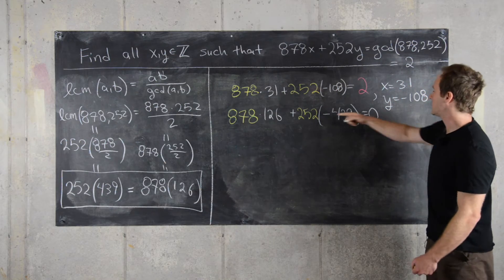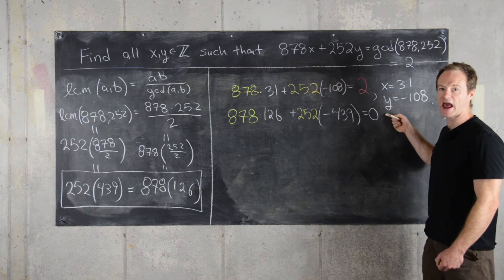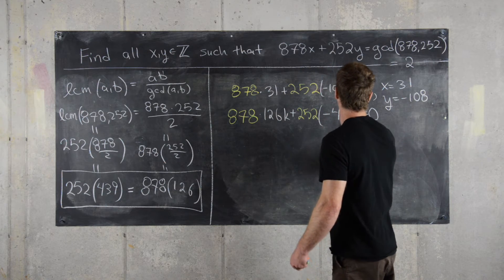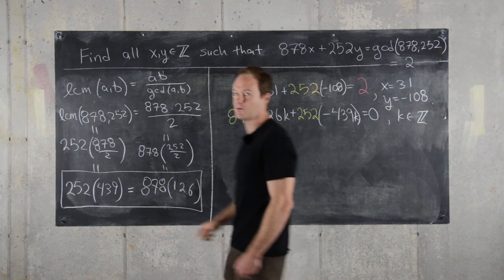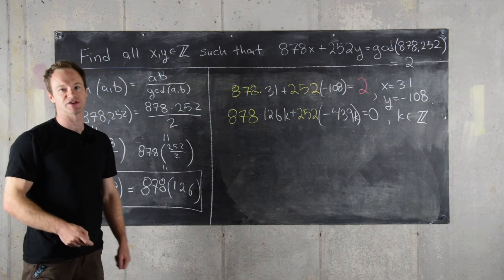And then what we can do from here is multiply this equation by k where k is any integer. We can multiply this by k and this by k where k is any integer. And if you multiply 0 by any integer, you obviously get 0. So this equation still holds.